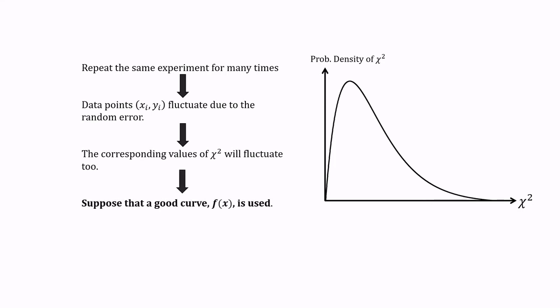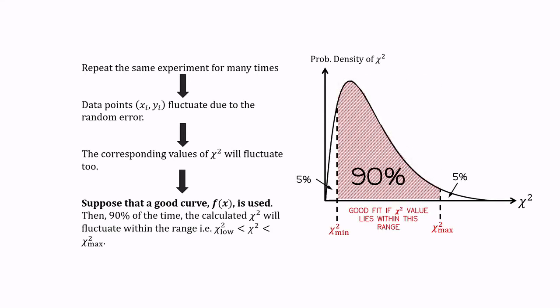Then, 90% of the repeated experiments will produce a chi squared value that fluctuates between the critical chi squared values, which are the chi squared min and the chi squared max.